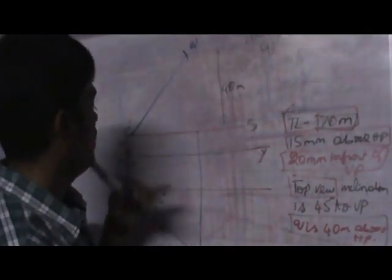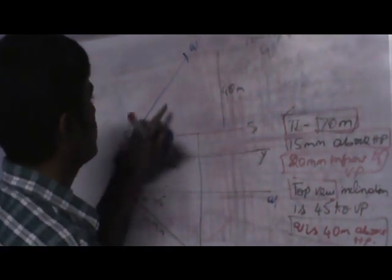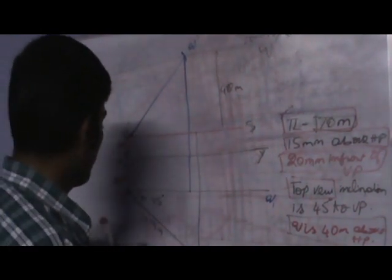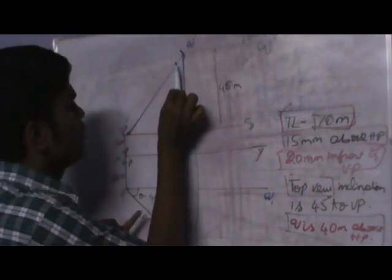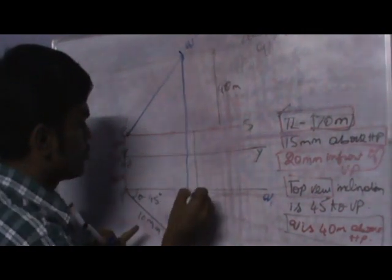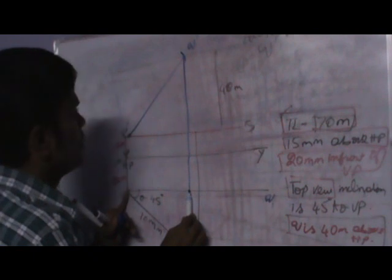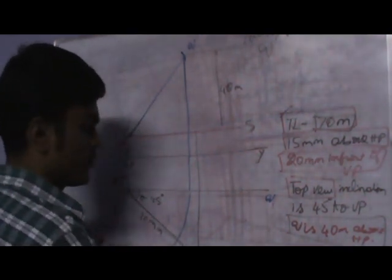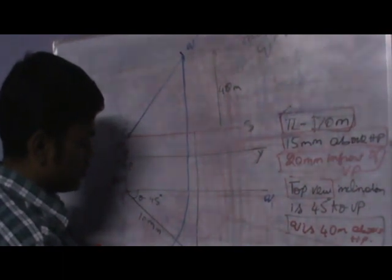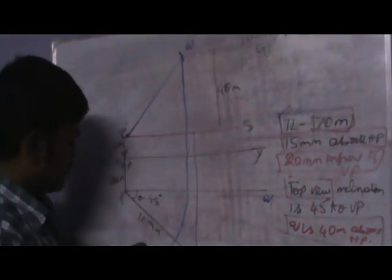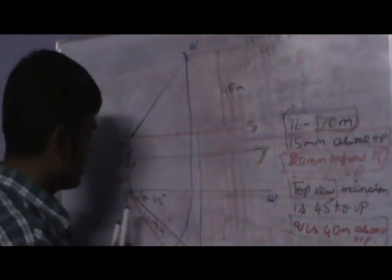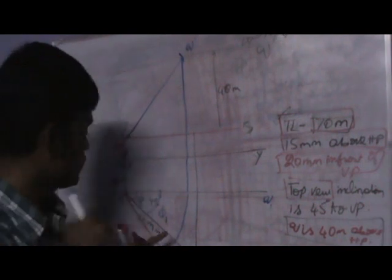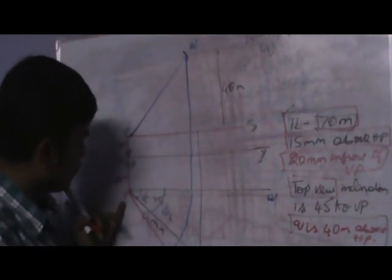To draw the top view, draw a perpendicular line from Q' to the locus of Q'. Take the distance of P and this perpendicular projection, then cut an arc so you get a smooth curve touching the locus of Q'. Name this point Q2. Join P and Q2 to get the inclination phi1. The given top view inclination is 45 degrees, and phi1 is the inclination obtained by joining P and Q2.